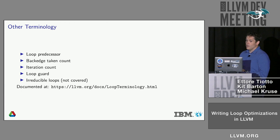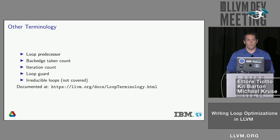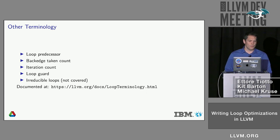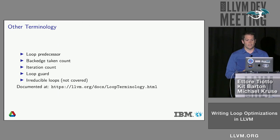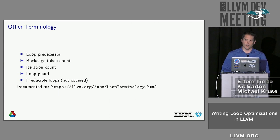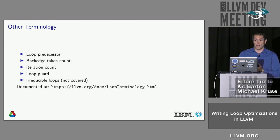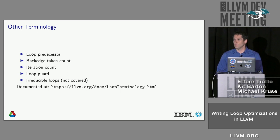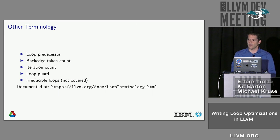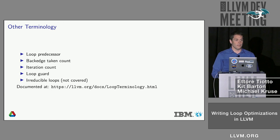There's a lot of other terminology used in loop optimizations. We've created a doc on the LLVM docs website that lists the different terminology used in loop optimizations and loop passes, and tries to provide concrete definitions. This is very much a work in progress. The document has been started and covers a lot of the terminology, but if you see things that are obviously missing, patches are welcome. Any improvements to the documentation are certainly welcome. This is the starting point for people looking at loop passes in terms of understanding the terminology.